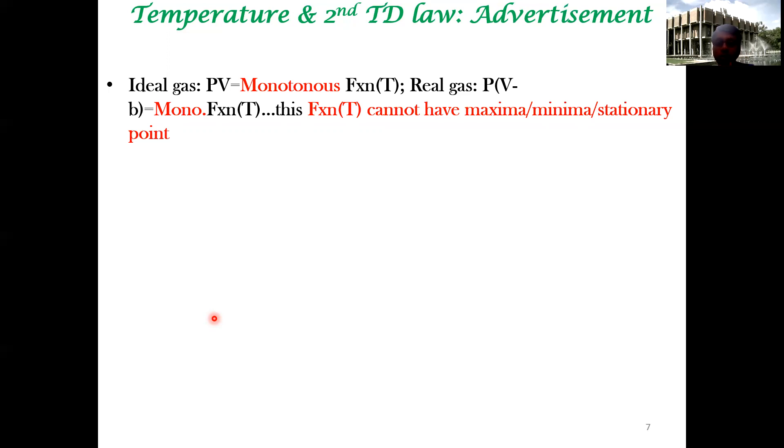For an ideal gas, the point particles don't have so-called excluded volume interaction we discussed this in the last discussion. Even for a real gas, a very simple equation of state can be P times V minus B. That should also be a monotonous function of temperature. What is important - this function has to cannot have a maxima or a minima or a stationary point. These are excluded. If this condition is valid - this times this is a monotonous function of temperature - your temperature is well defined, it can be measured and so on.